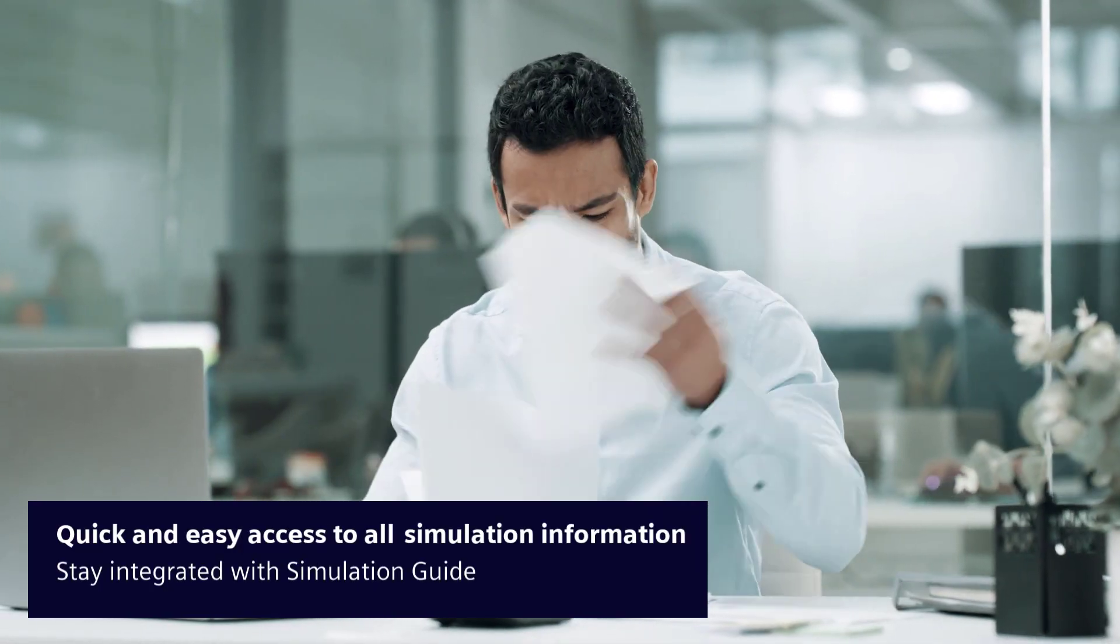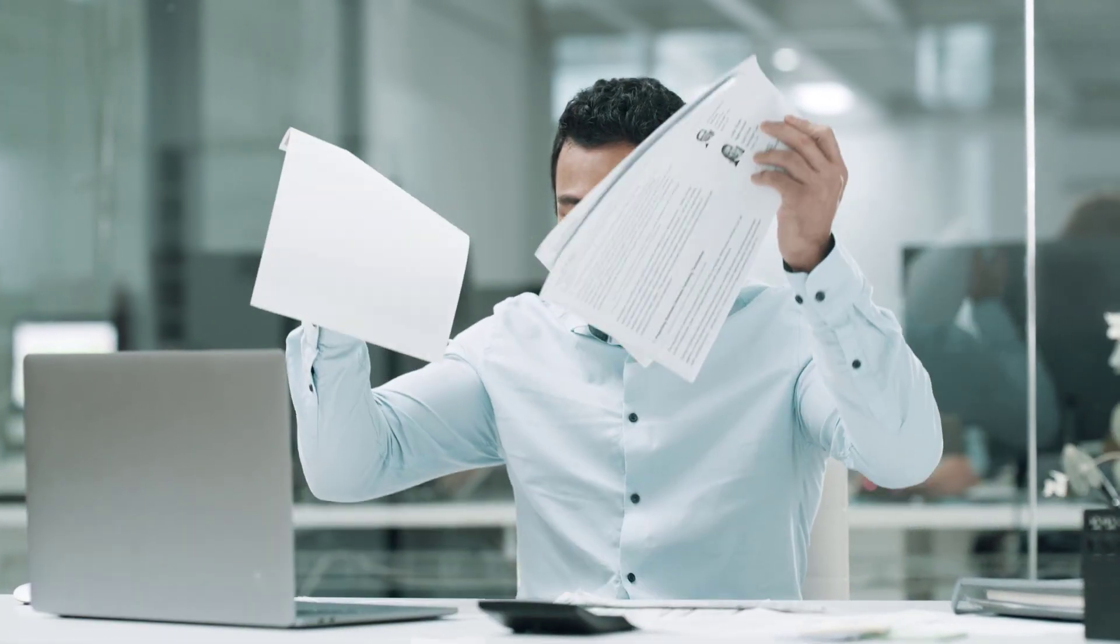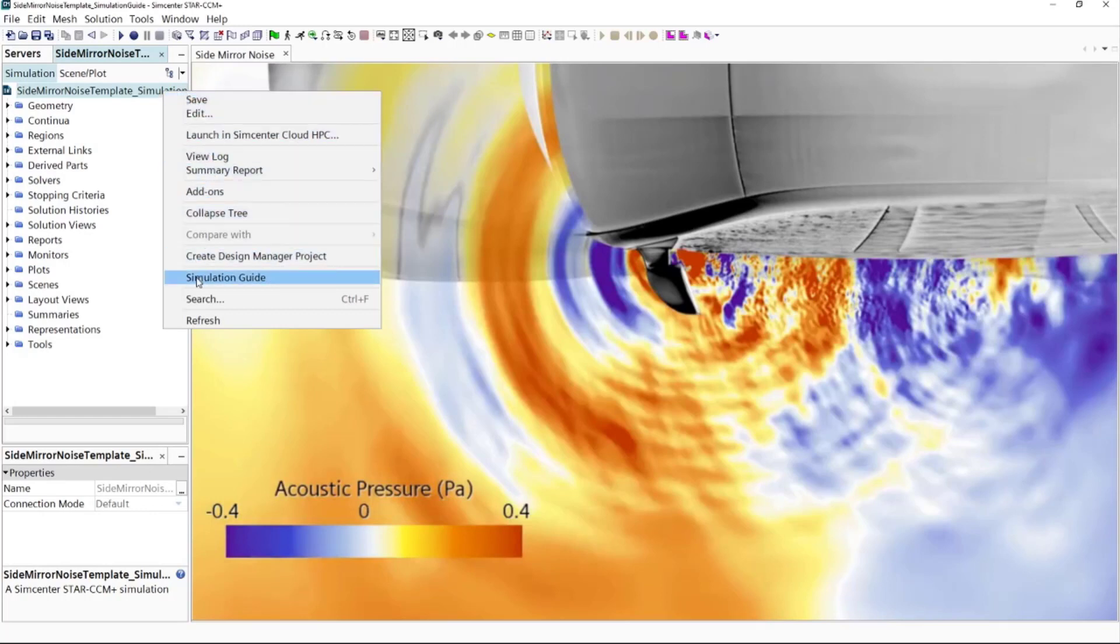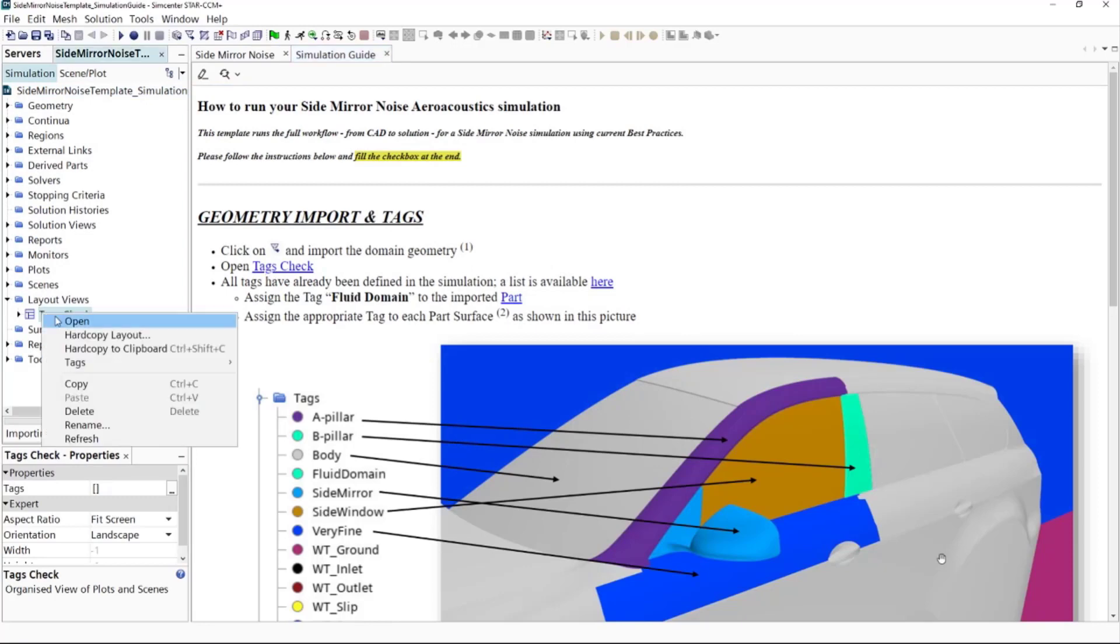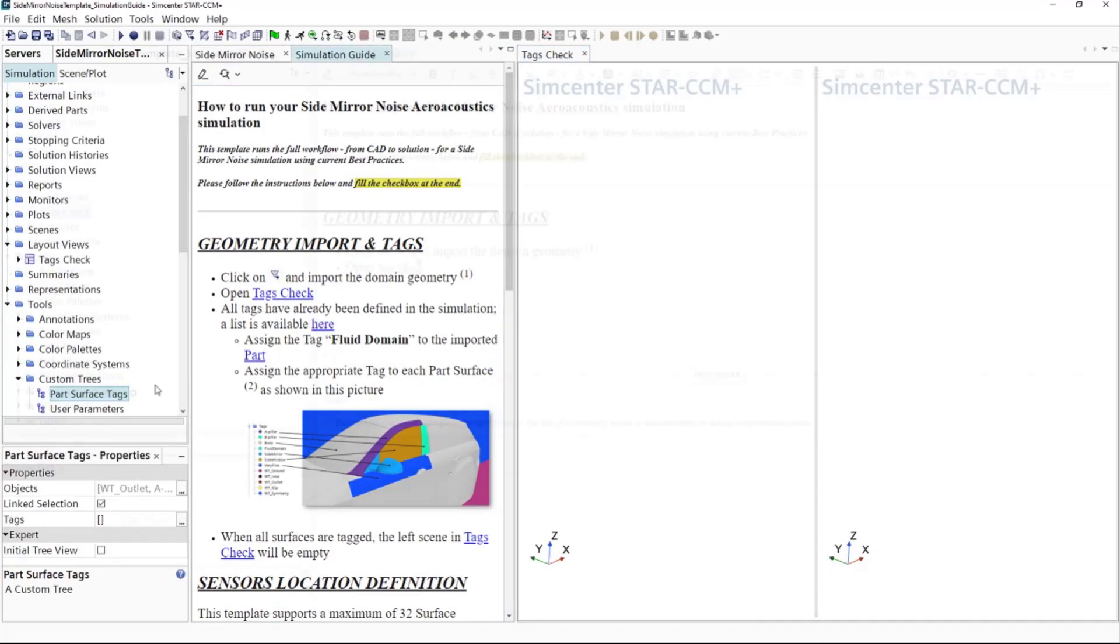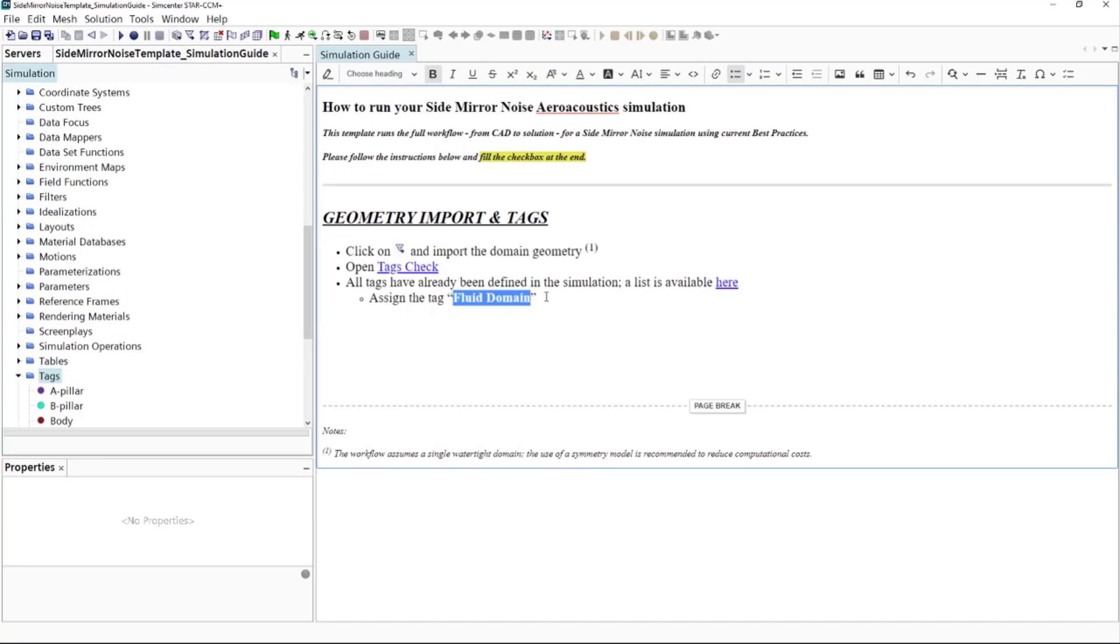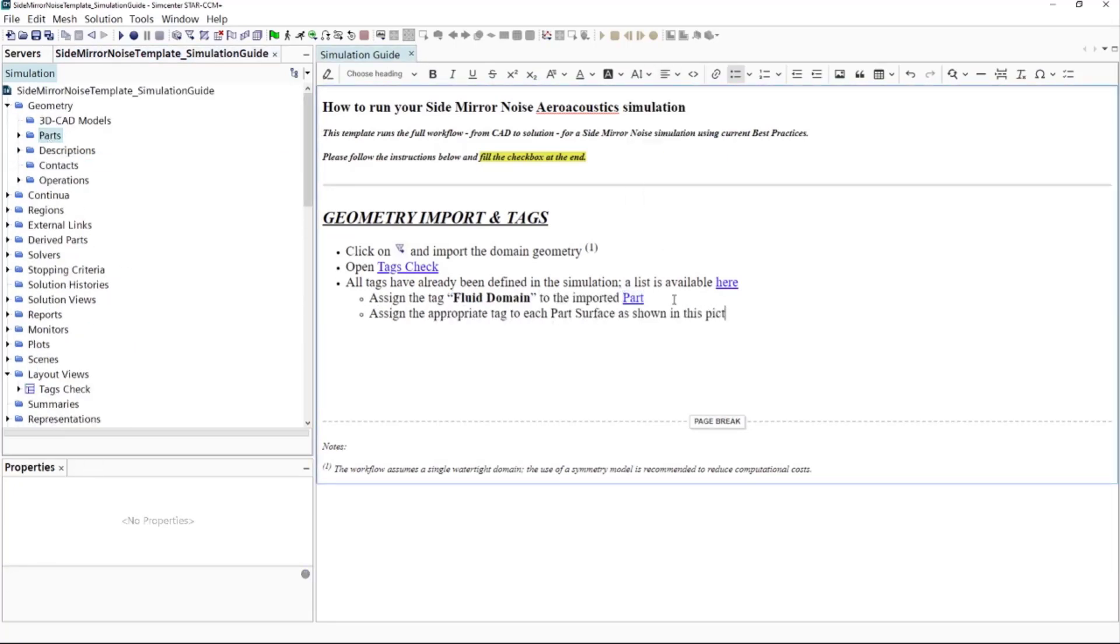Searching disconnected resources for the latest simulation setup documentation or usage instructions is a massive productivity burden. In Simcenter Stasis Mplus 2302 we are introducing the simulation guide. The productivity tool allows you to store all relevant information just where you need it, inside the simulation file. Write text, add images, create tables and add hyperlinks to relevant items in the simulation setup tree with an integrated editor.